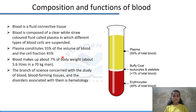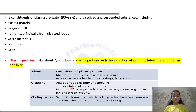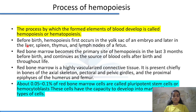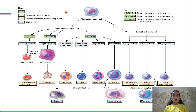Quick recap of the previous lecture: blood is composed of two parts — 55% of the volume is occupied by plasma and 45% is the cellular fraction. The study of blood is known as hematology. Plasma constituents include water (90–92%) and other substances like plasma proteins, inorganic salts, nutrients, waste materials, hormones, and gases.